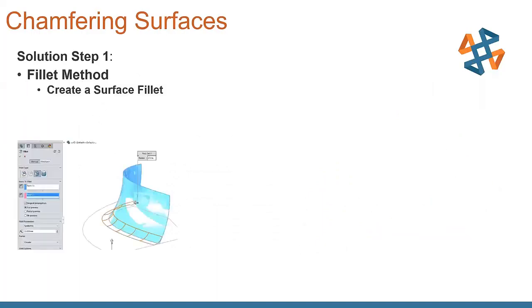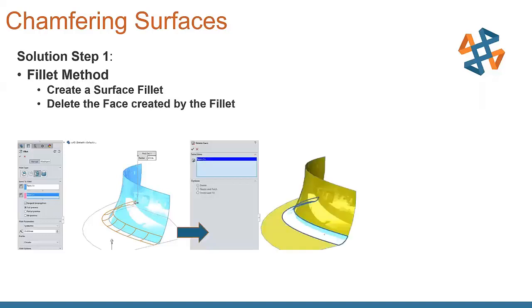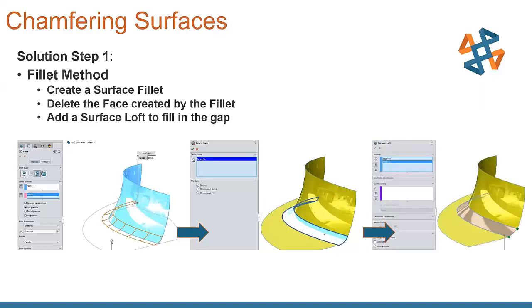Solution one is the fillet method is what we're going to call this. We create a surface fillet to the same size that we would like our chamfer created. That is going to turn around, it's going to put our fillet between those two surfaces. We then turn around and we delete the face that was created by the fillet. When we delete that face, it now leaves a gap between our two surfaces. We turn around and we add a surface loft to fill the gap. You can see that we used the two edges that were left in the opening there to control it. If we wanted to, we could get fancy and put some guide curves in there. This one worked out pretty good just the way it was.